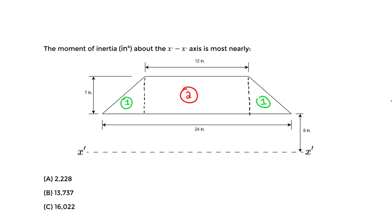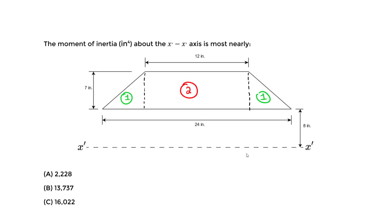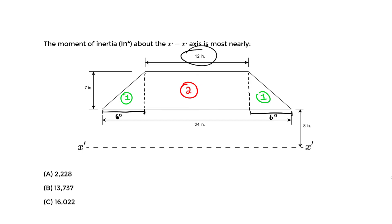The two triangles are identical and therefore have the same moment of inertia. To find the base dimension of each triangle, we take 24 minus 12, which gives us 12, then divide by 2 to get 6 inches on each side. So we have 6 inches on the left, 12 inches for the rectangle base in the center, and 6 inches on the right — totaling 24 inches, confirming our calculation.